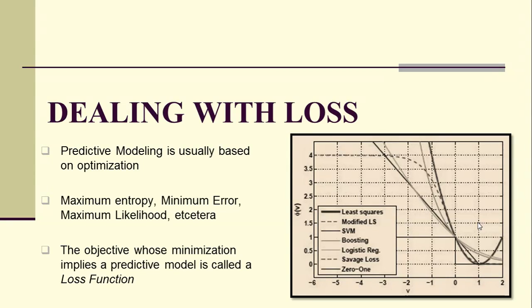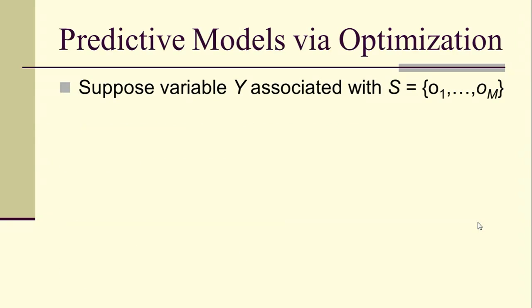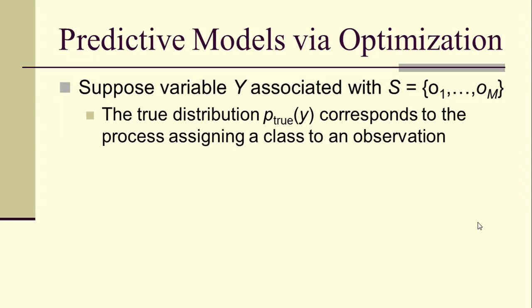The objective whose minimization implies a predictive model is called a loss function. So predictive models usually come to us via optimization. If we have a variable y associated with some set of outcomes O1 up to O's capital M, the true distribution corresponds to the process that assigns a class to the observation, and the data is produced by that process.